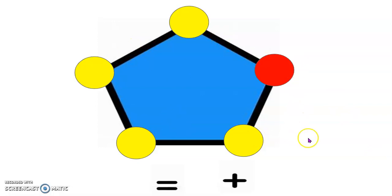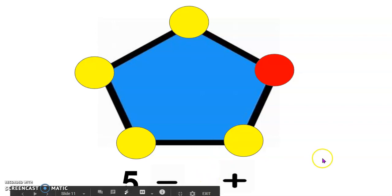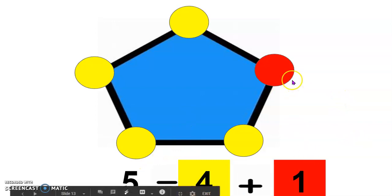How many dots do you see? 1, 2, 3, 4, 5. There are 5 dots. How many of those dots are yellow? I see 1, 2, 3, 4 yellow dots. 4 yellow dots plus how many red dots? Plus 1 red dot. 5 is equal to 4 plus 1. Good job, boys and girls.